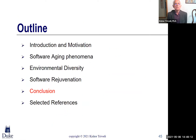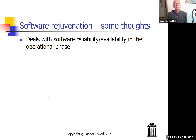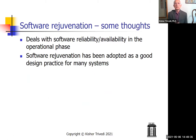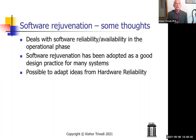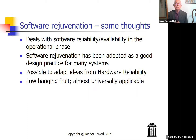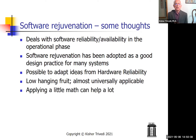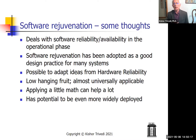To conclude: software rejuvenation deals with software availability and reliability in the operational phase, whereas most work on software reliability deals with production or testing phases. Software rejuvenation has been adopted as good design practice for many systems, and it is possible to adapt ideas from hardware reliability — the old notion that software is different from hardware should be changed. Failures due to software aging are low-hanging fruit, and the ideas we have advocated here are almost universally applicable. Apply a little math — it can help a lot — and this has the potential to be even more widely deployed.